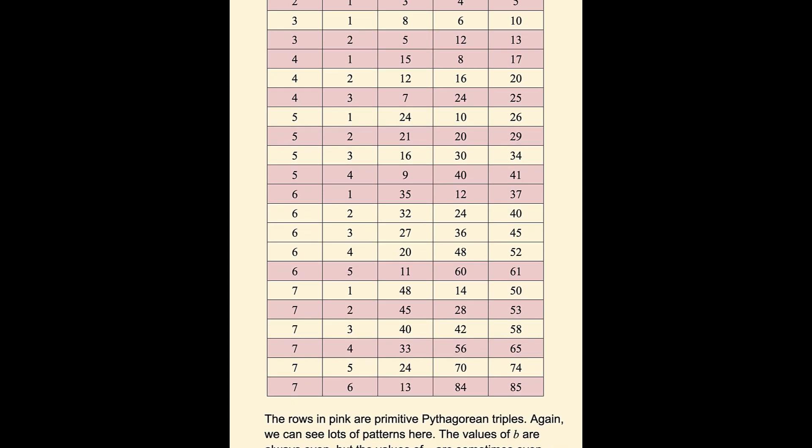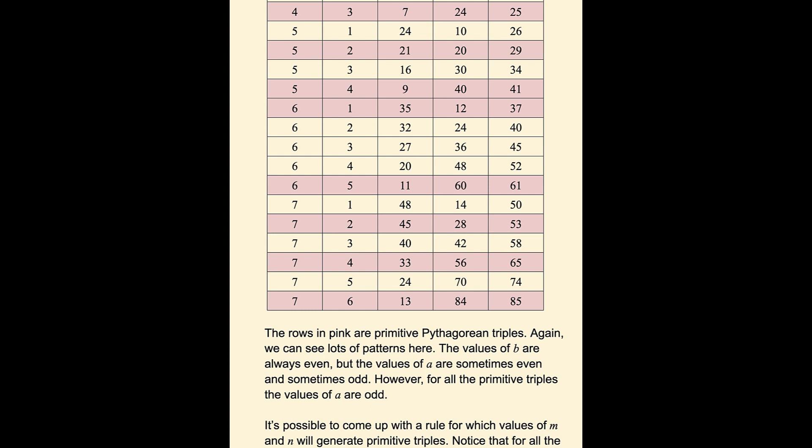There are some other patterns here, too. Values of b are always even here, but the values of a are sometimes even and sometimes odd. For all the primitive triples, though, the values of a are odd.